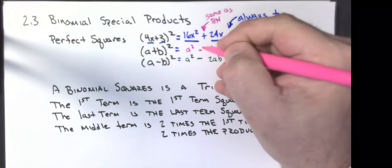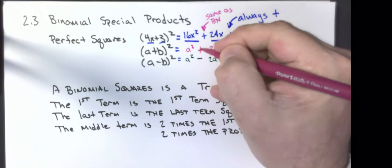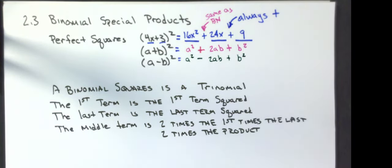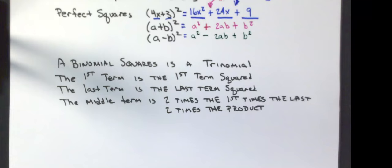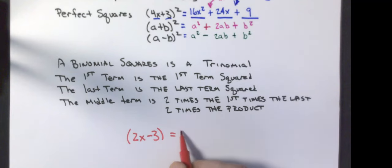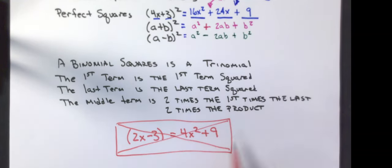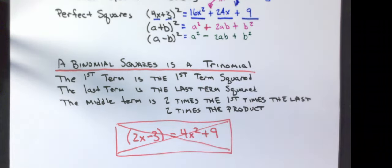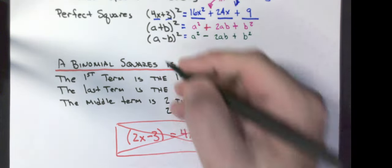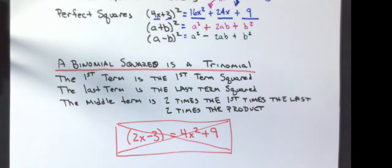That one is actually positive — let me fix that. Here's something I do not want to see. If I see something like (2x − 3)² and you give me 4x² + 9, that is wrong. The first term is right, the last term is right, but you missed the middle term. The biggest point here is a binomial squared is always, always, always going to be a trinomial — I need three terms. What you're doing is missing the middle term: the outer and inner multiplications.